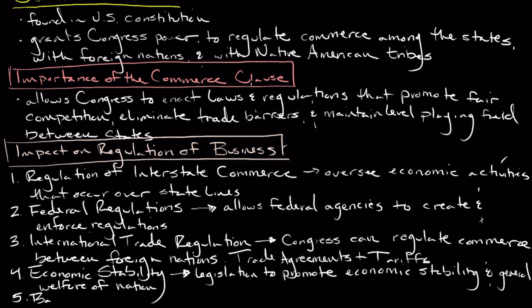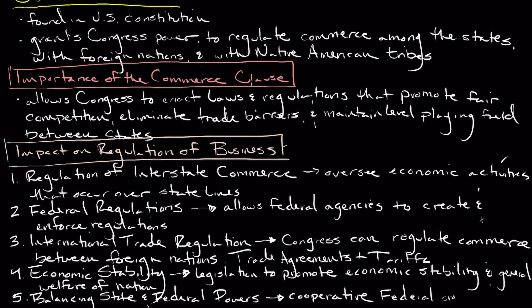While the Commerce Clause grants broad regulatory powers to the federal government, it also helps preserve a balance between state and federal authority. This clause recognizes the importance of cooperative federalism — a concept we're learning about this week — which allows states to implement additional regulations as long as they don't unduly burden interstate commerce. This arrangement ensures a degree of flexibility for states while maintaining a cohesive national economic framework.